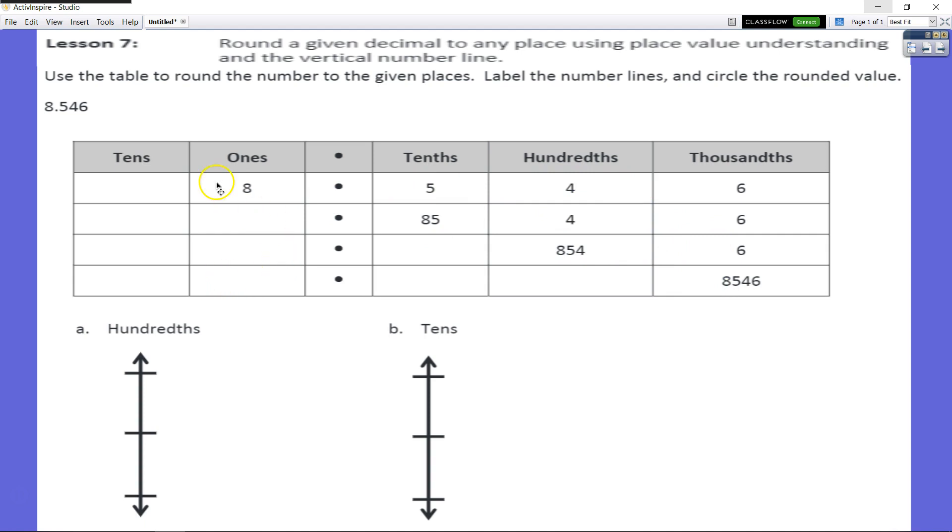So let's take a look here. We want to round to the nearest hundredth and then we're going to round to the nearest tenth. So what are our nearest hundredths? So if we changed this number and looked at our renaming as hundredths, we would have 854 hundredths. So that would be the lowest hundredths.